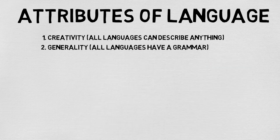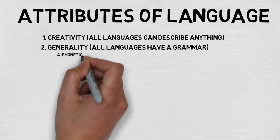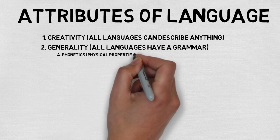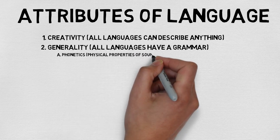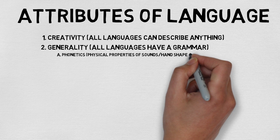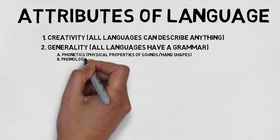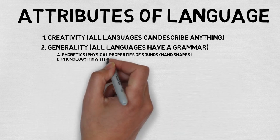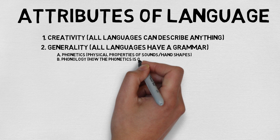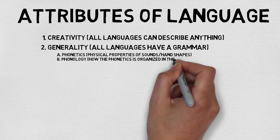The second unique component of human language is generality, which is to say that all languages have grammar. When we talk about grammar, we mean components that define how a language works.